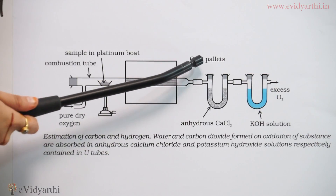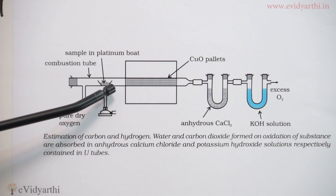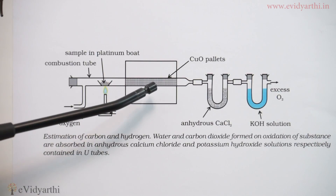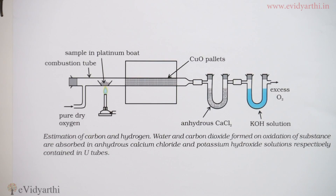These are the copper oxide pellets. When the Bunsen burner is switched on, the platinum board moves gradually through the combustion tube in the presence of the copper oxide pellets, where this organic compound is heated with excess dry copper oxide and pure oxygen passing through. You can see that the organic compound is being heated with dry copper oxide in the presence of pure dry oxygen. If carbon is present in the compound, it will change to carbon dioxide; if hydrogen is present, it will change to water.